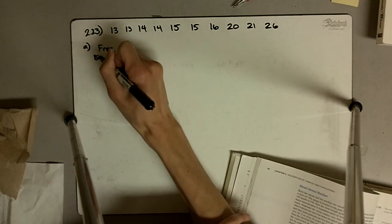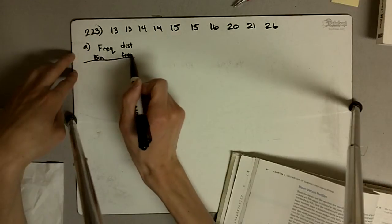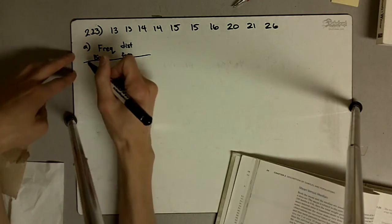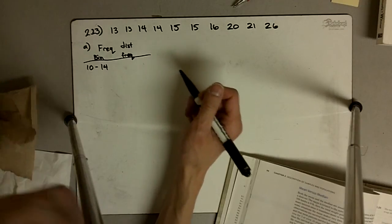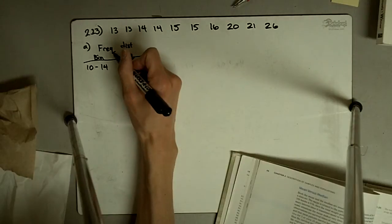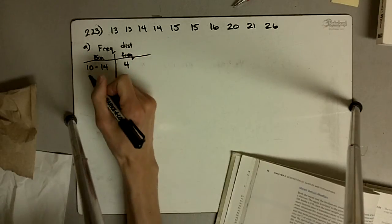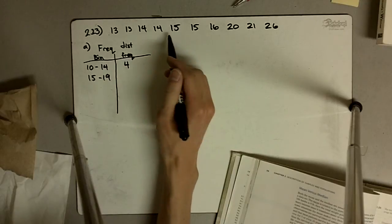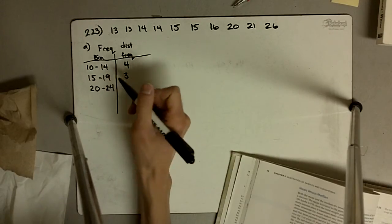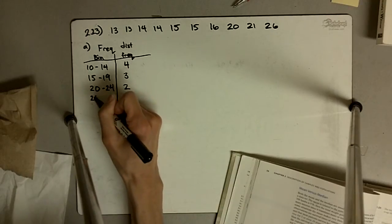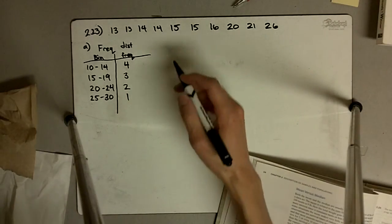For our first frequency distribution, each bin consists of a range and the count of data points within it. With bins of size 5, the first bin goes from 10 to 14 — that's 10, 11, 12, 13, 14, which is 5 values — and we have four numbers there: 13, 13, 14, and 14. Then 15 to 19 contains three numbers. From 20 to 24 contains two numbers, and from 25 to 29 contains one number. That is a completely acceptable frequency distribution.